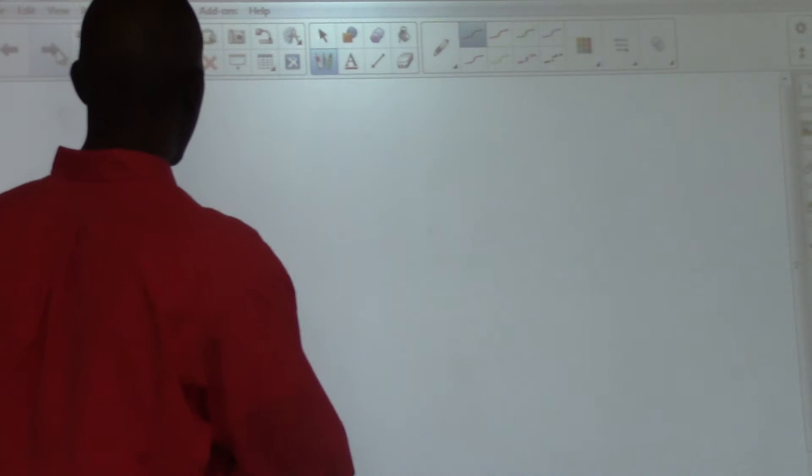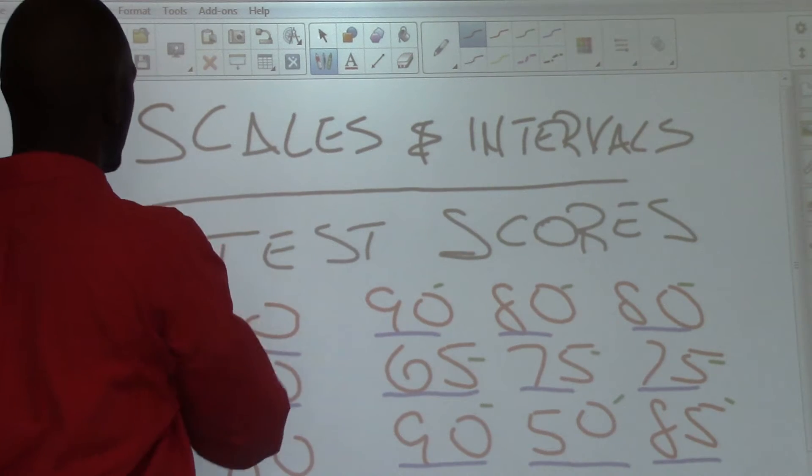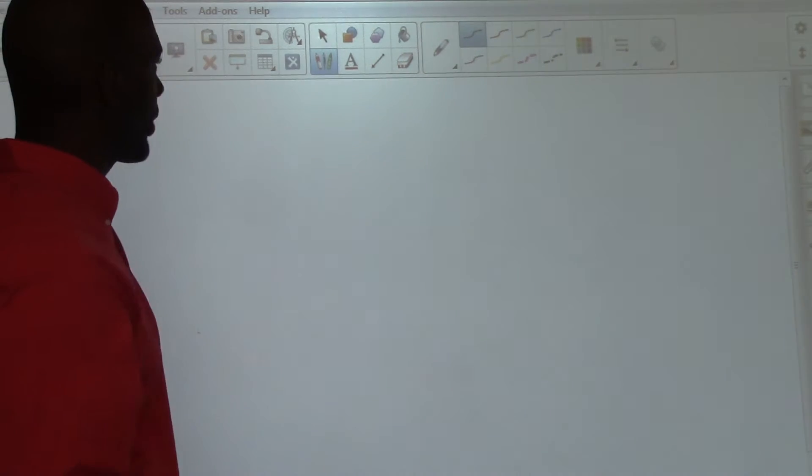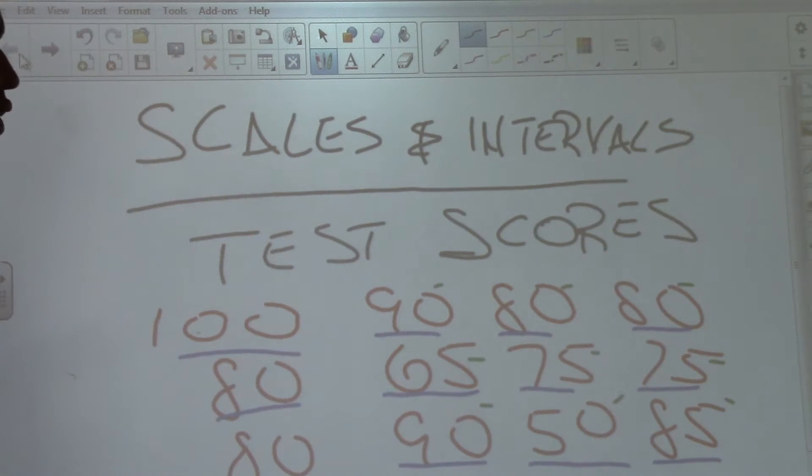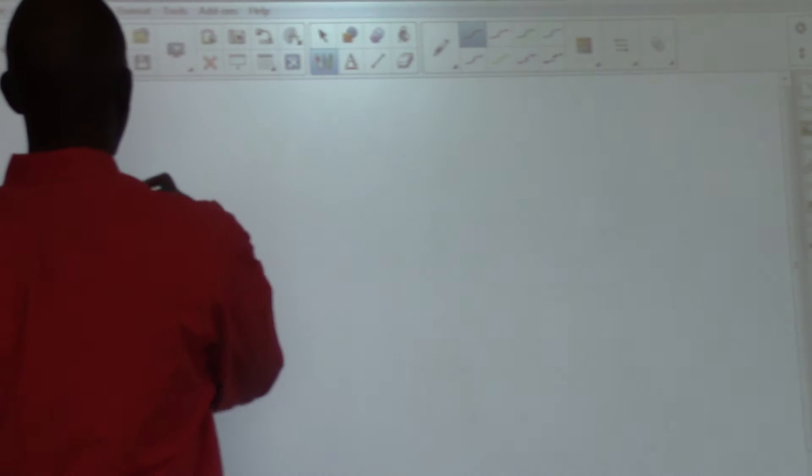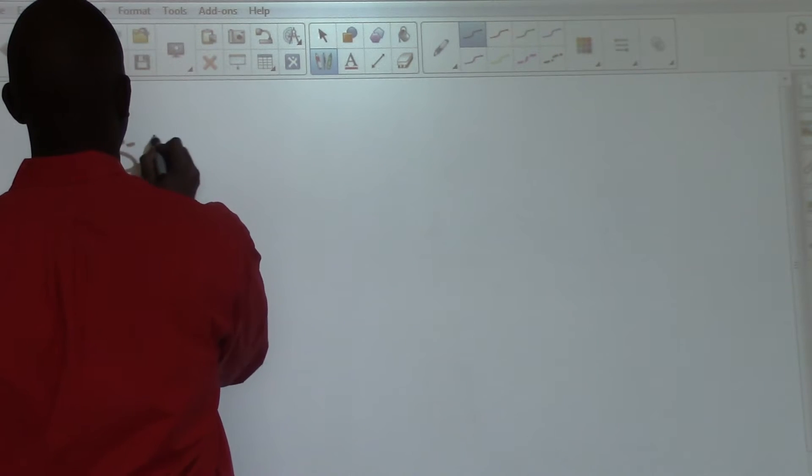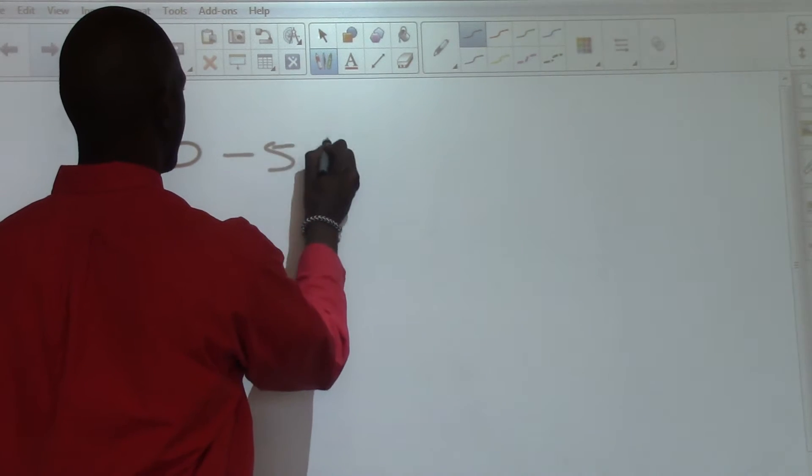For the scores that we receive on a particular test, what we're going to do is we're going to create a range. We have scores that went from 50 to 100, so we're going to use intervals of 10. So we're going to say from 50 to 59.